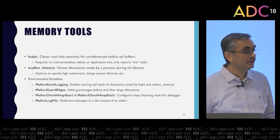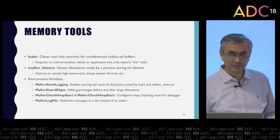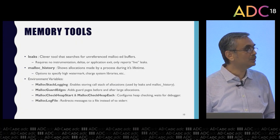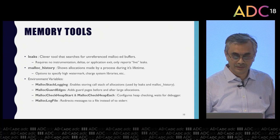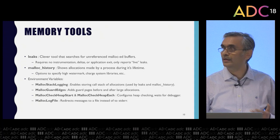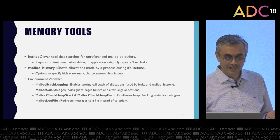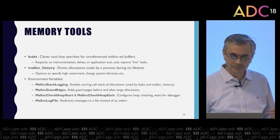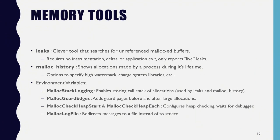There are also certain environment variables you can set to make results easier to analyze. One is `MallocStackLogging` — if enabled, for every allocation the malloc library will also store the call stack, so when you look at a block you can see where it was allocated. You can use `MallocGuardEdges`, which adds guard pages before and after large allocations so reads or writes from those locations cause a crash. There are also ways to configure heap checking, and you can specify `MallocLogFile` to store information to a file instead of writing directly to stderr.